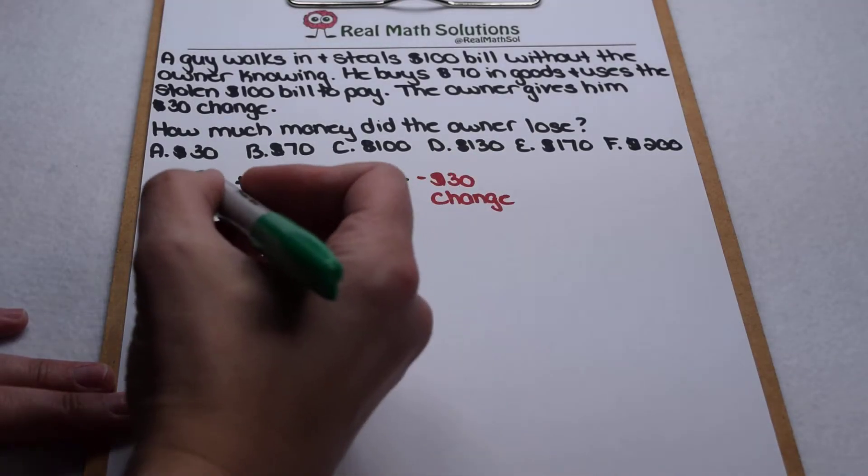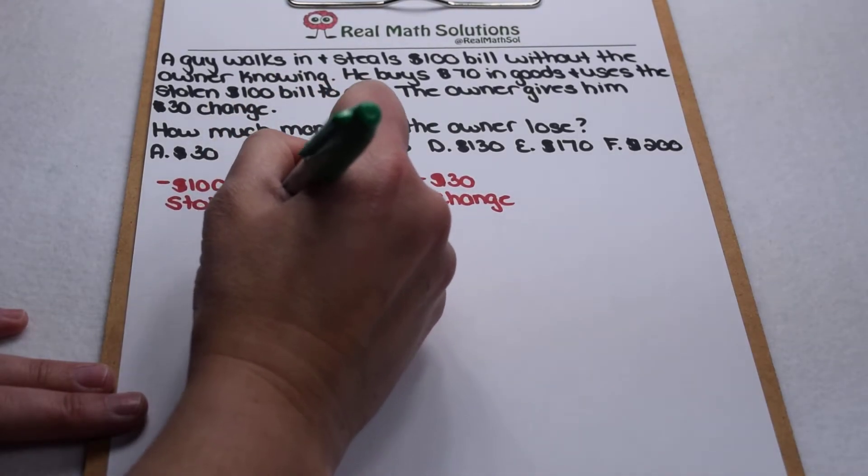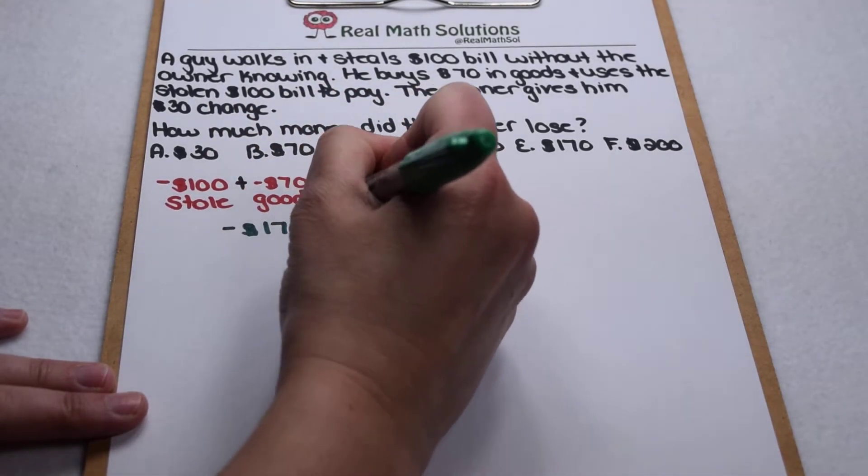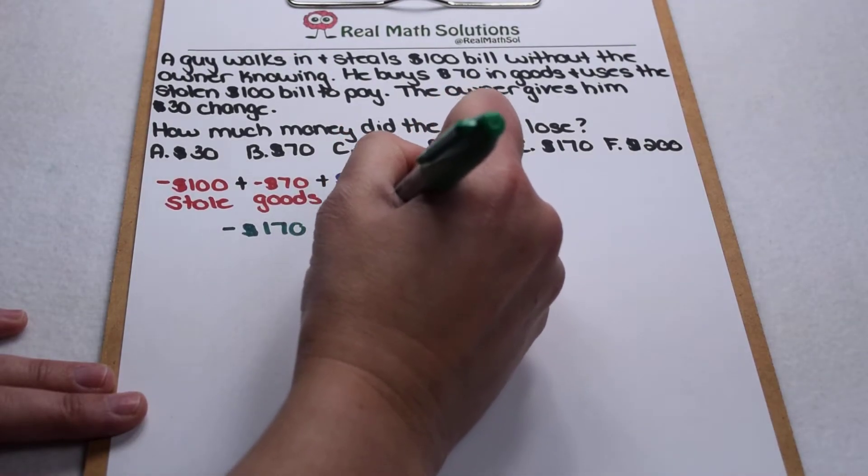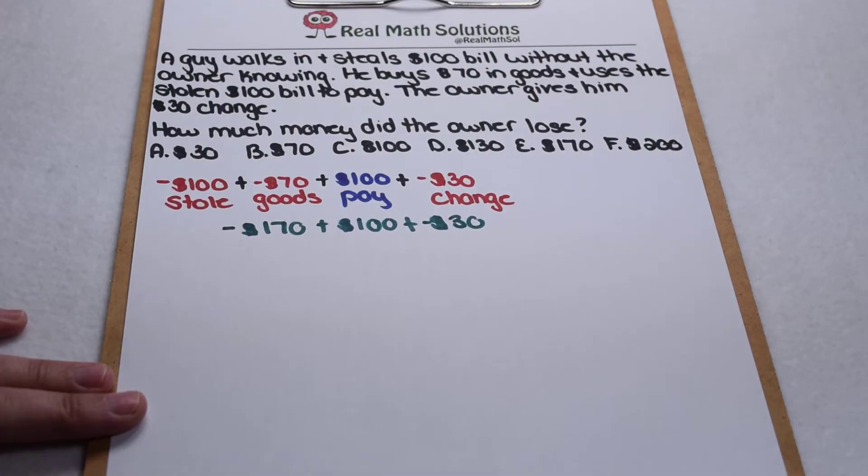So let's go through and add those together. Negative $100 and negative $70 means so far he has negative $170, but to that we're going to add the $100 he paid with, but then we're going to add the negative $30 and change.